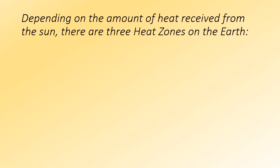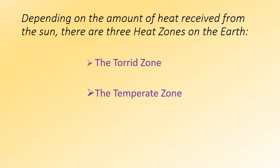Depending on the amount of heat received from the sun, there are three heat zones on the Earth: the Torrid Zone, the Temperate Zone, and the Frigid Zone.